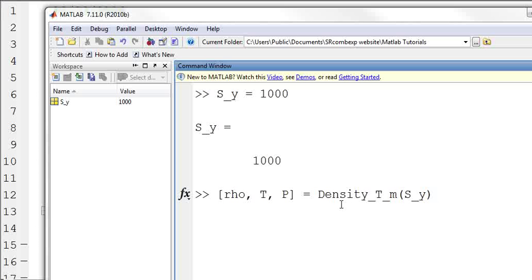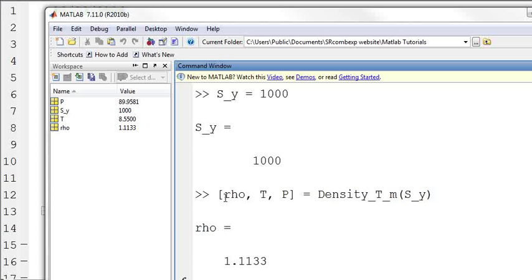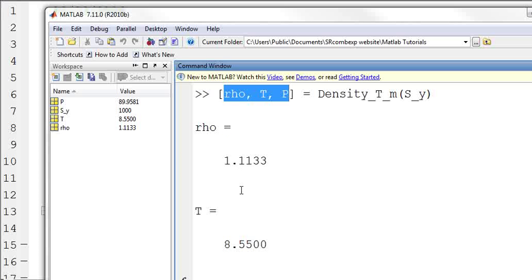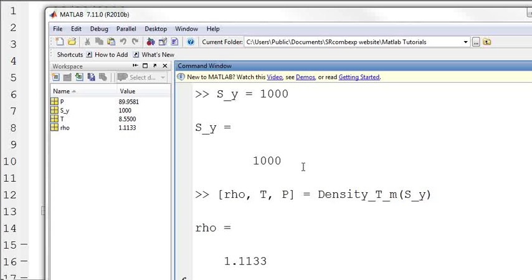So I can put this in and if I hit enter, then I will calculate the density, the temperature, and the pressure. These are calculated first, but it's outputting rho, T, P. So we're getting the answer rho, T, P here and there in our workspace. And you can use them like anything else that is in your script if you have this function in there.